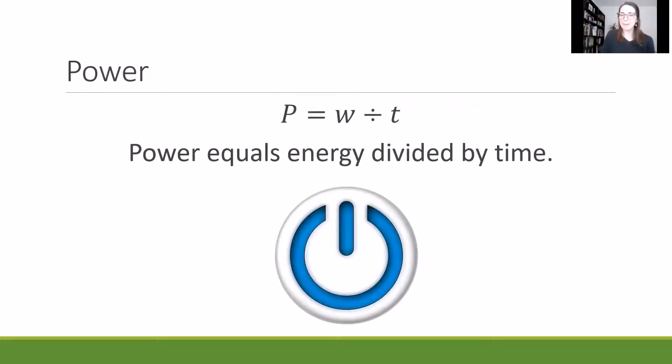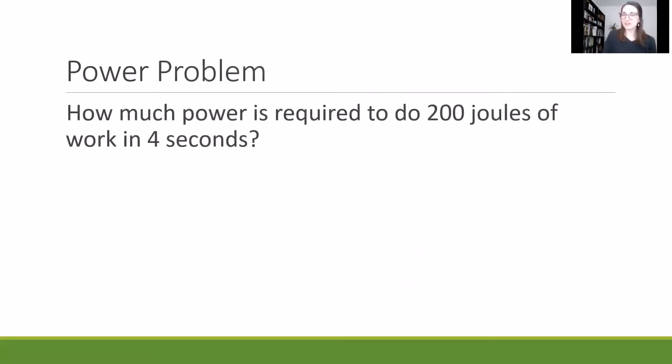Next, let's take a look at power. So power is represented with the capital P and it equals energy divided by time. So if we look at that in context, it says, how much power is required to do 200 joules of work in four seconds?